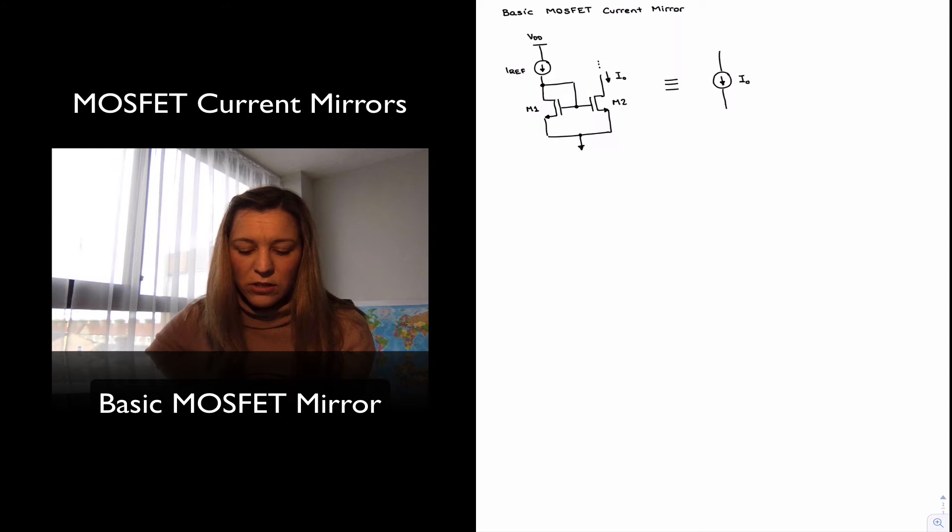In this case, the reference current is being originated in that current source IREF, which is just represented as an ideal current source. There are multiple ways of possibly implementing IREF, but we'll just leave it as a symbol for now before we get into any particular practical circuits for it. And then basically that IREF runs through the diode connected transistor M1, gets mirrored into M2, and produces an output current I out at the drain of M2.